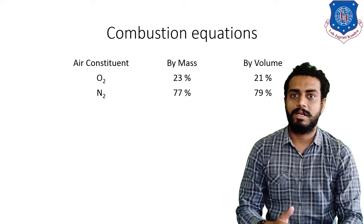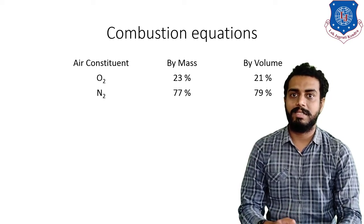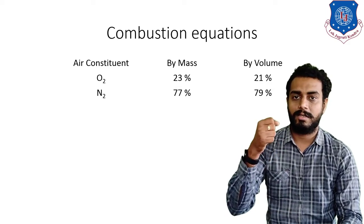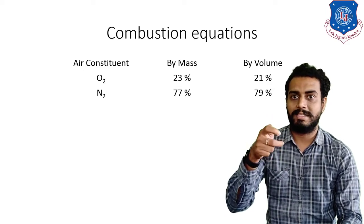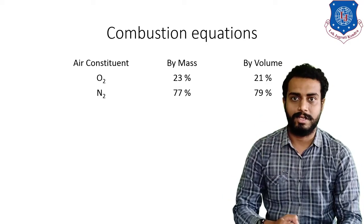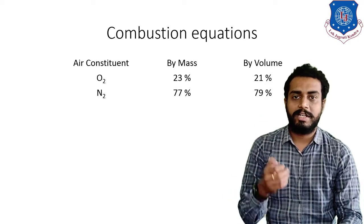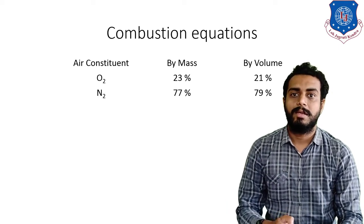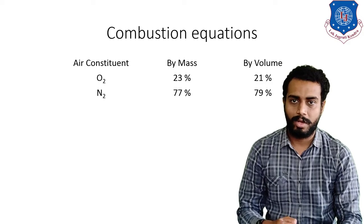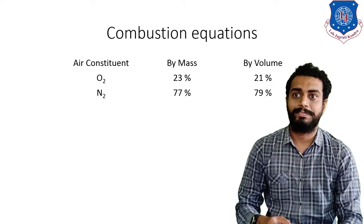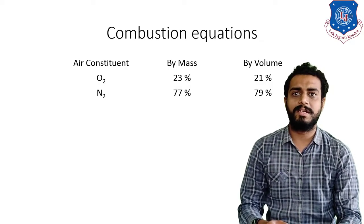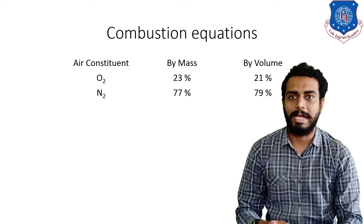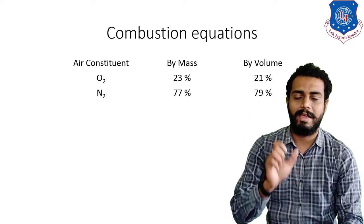As you can see on the given screen, the table shows that air is constituted of two gases: oxygen and nitrogen. Oxygen is present at 23% by mass and nitrogen at 77% by mass. If you take by volume, oxygen is present at 21% and nitrogen at 79% in air.